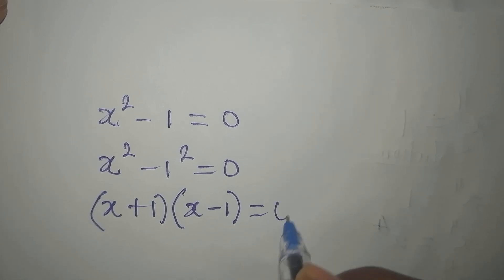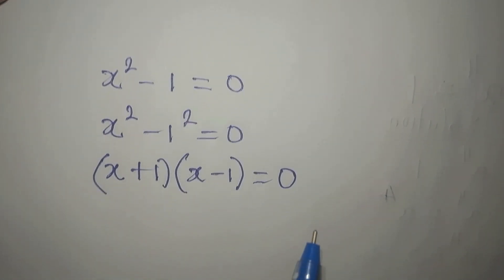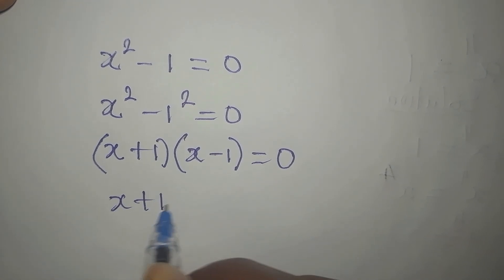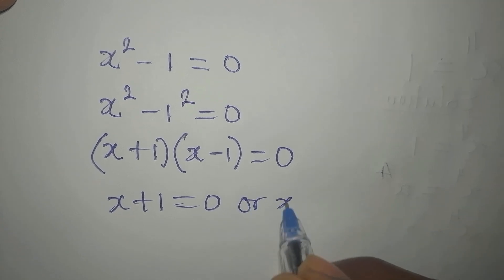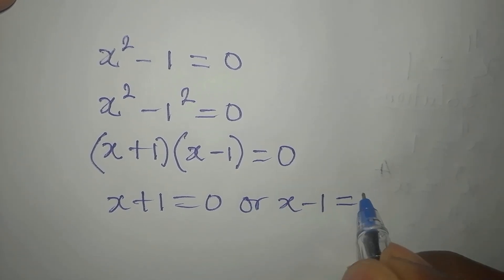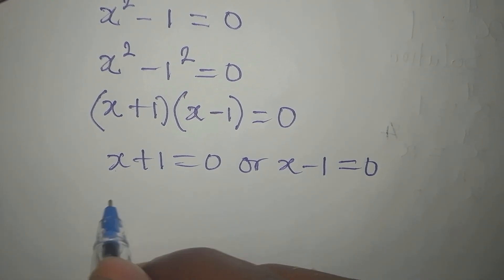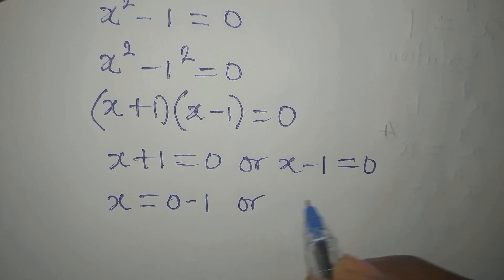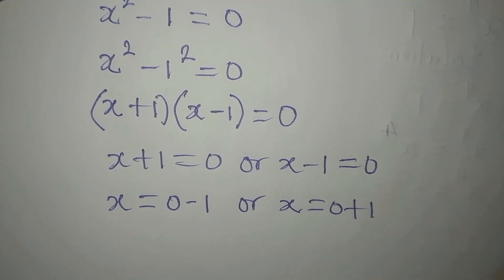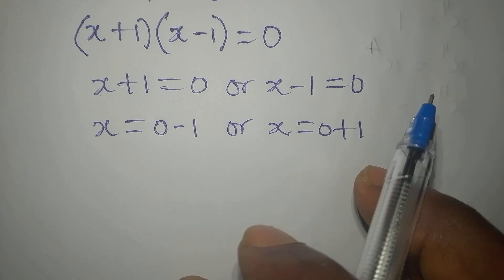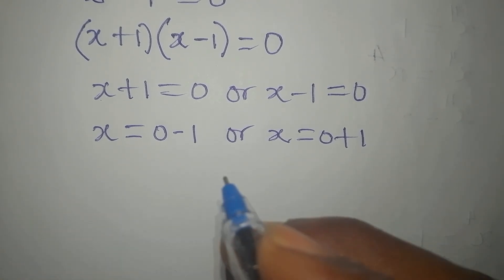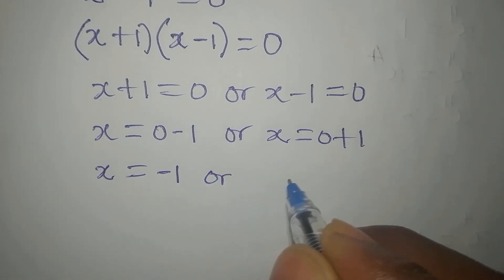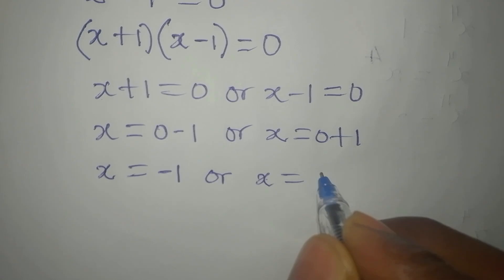Both factors are equated to zero. Either x plus 1 equals zero, or x minus 1 equals zero. From the first, x equals negative 1, and from the second, x equals positive 1.